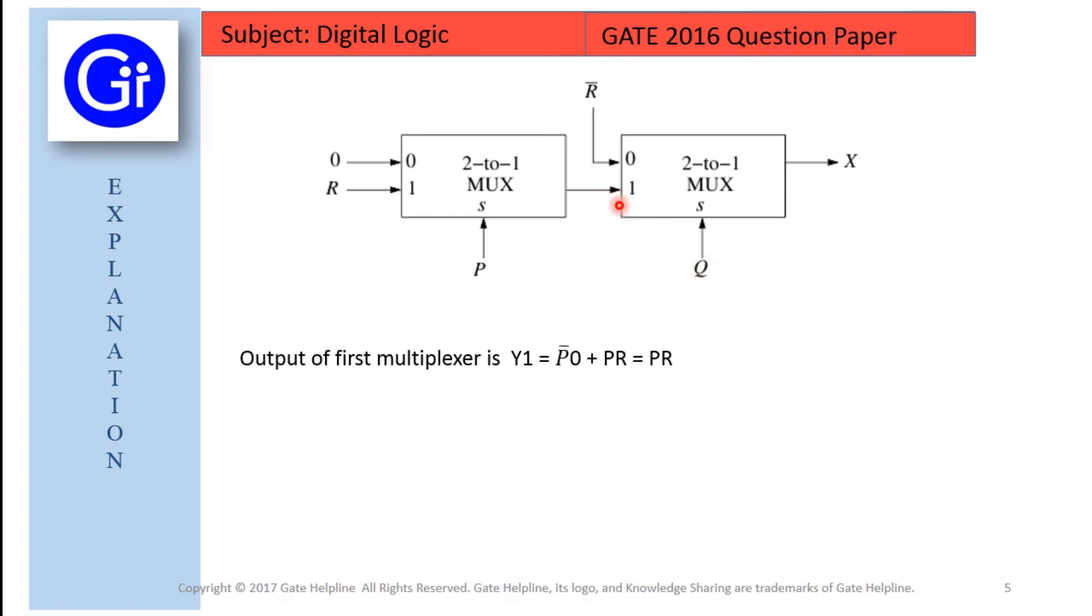So it will be Q and the input from here will be PR. And there is an addition between these inputs. So it will be Q bar, R bar for select line 0. And for Q, Y1, as this is the Y1,